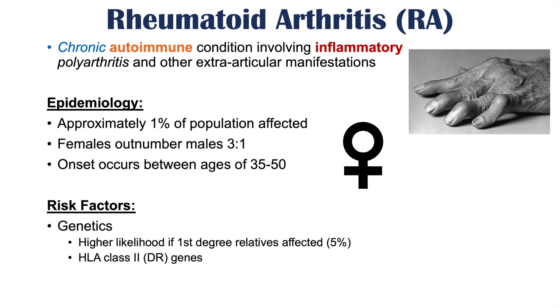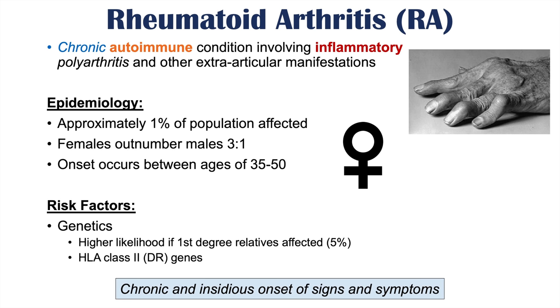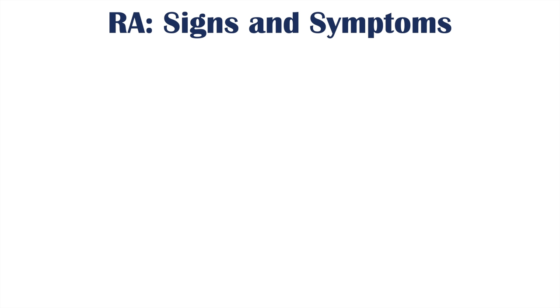The topic of this lesson is the signs and symptoms of rheumatoid arthritis. It's important to note that these signs and symptoms are going to be chronic and long-lasting, occurring throughout the patient's life, and they have an insidious onset, which means they can occur over days, weeks, or even months.